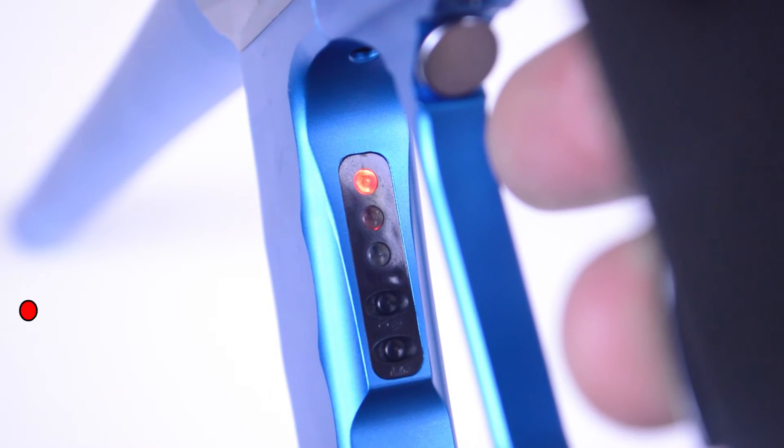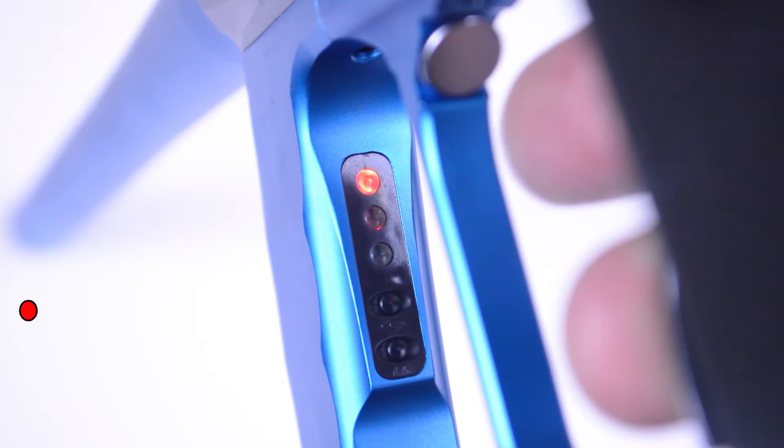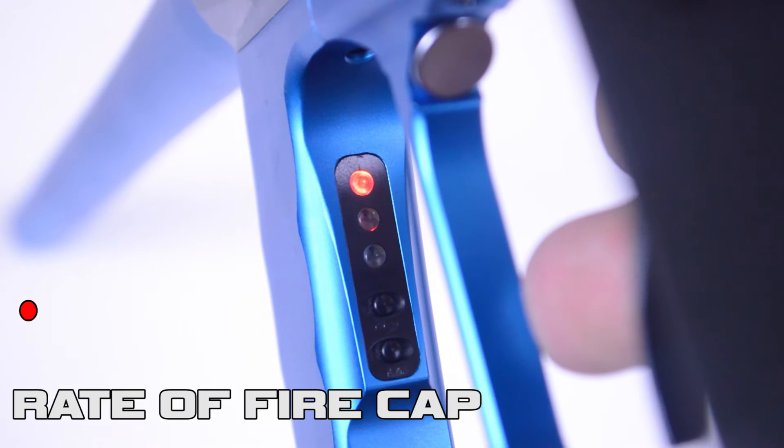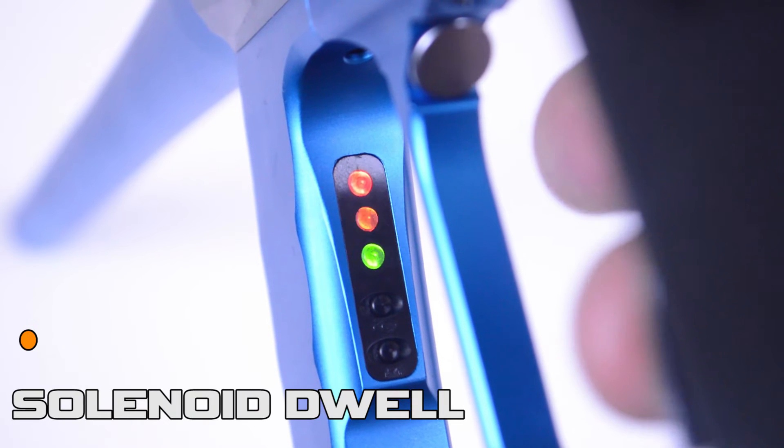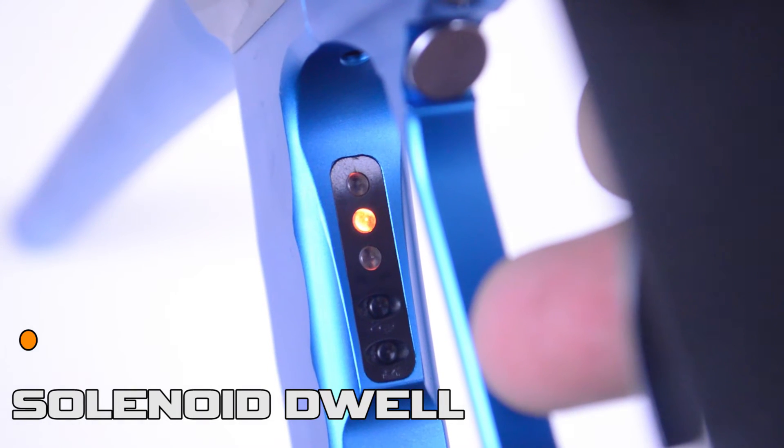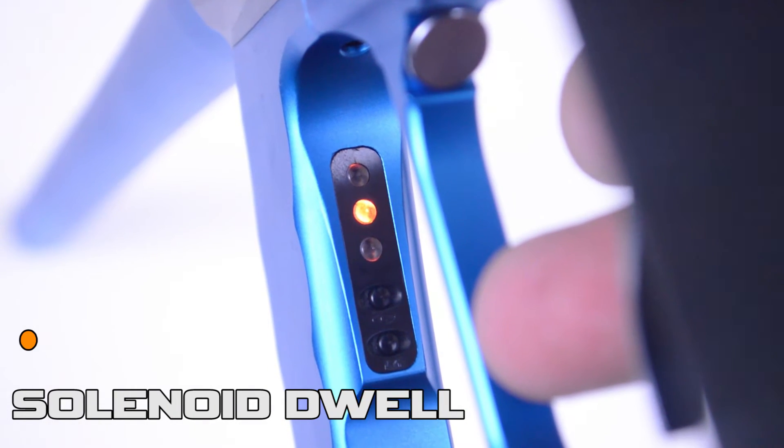When there's a solid LED, that signifies what parameter you're going to be adjusting. A single red shows your rate of fire cap. By pressing and releasing the trigger once, you'll cycle through the modes, and the next mode is the yellow LED light for solenoid dwell.